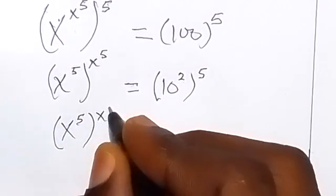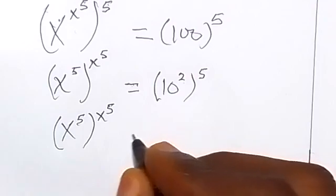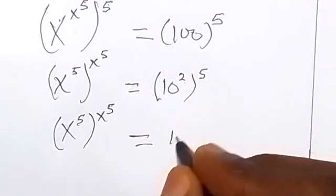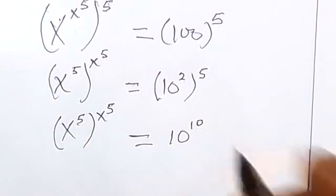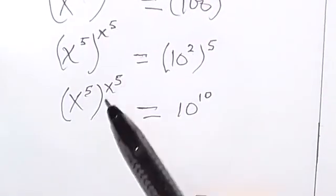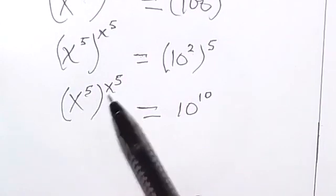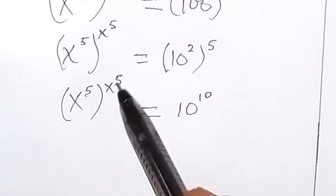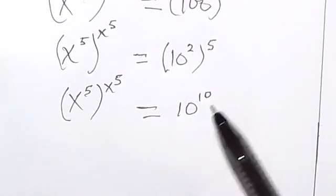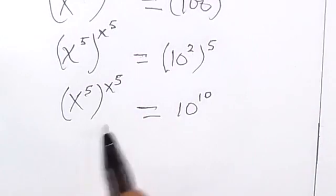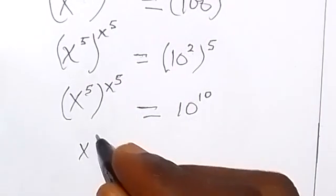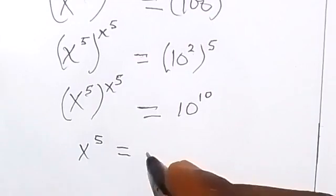Then x raised to power 5 equals to here: 5 times 2 gives us 10, so 10 raised to power 10. What we have here now, we can see that we have a number raised to the same number — same base, same index. Therefore x raised to power 5 is equal to 10.